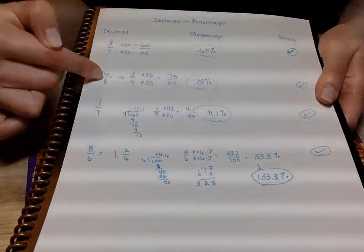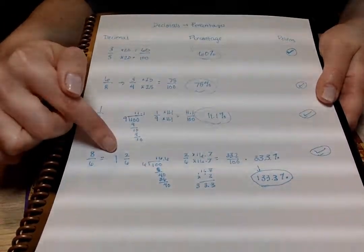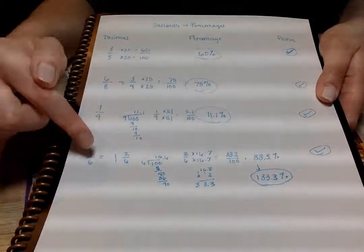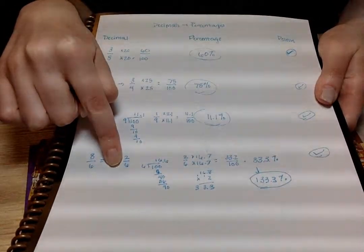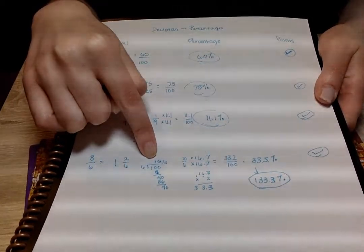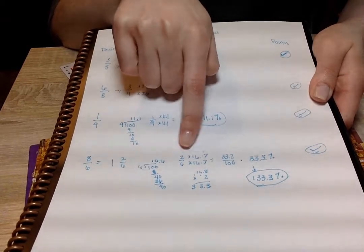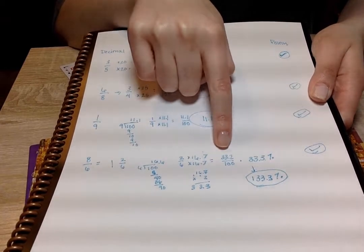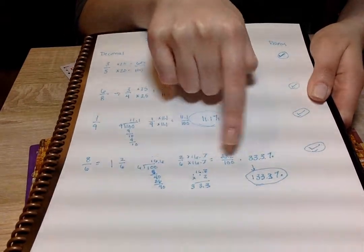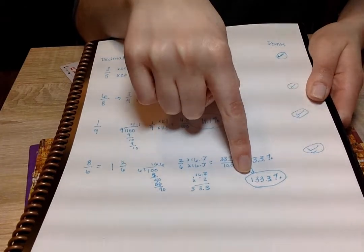So an example would be the flip of this fraction right here, which is 8 over 6, which when they simplify it down is 1 and 2 over 6, knowing that they only have to deal really with the 2 over 6. They will figure out how many times 6 goes into 100, which is 16.6, which rounded is 16.7. And they're going to multiply both the 2 and the 6 by 16.7 to get 33.3 over 100, which equals 33.3%, but remember we have this one over here. So they're going to make 133.3%.